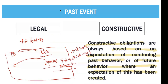An example of constructive obligation is a bonus. Normally, bonus is not based on law or contract, but if a company always gives a 14th or 15th month bonus every December, because of that continuing past behavior of always giving a bonus, employees will expect that the employer will give bonus again. So there is now an obligation — an expected future behavior — that the employer will give bonus in December. That is a constructive obligation.